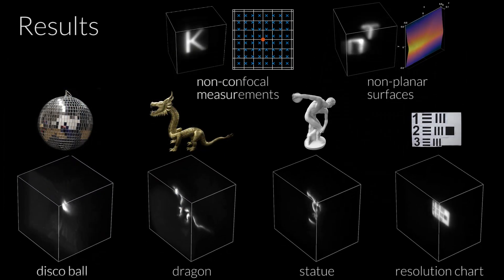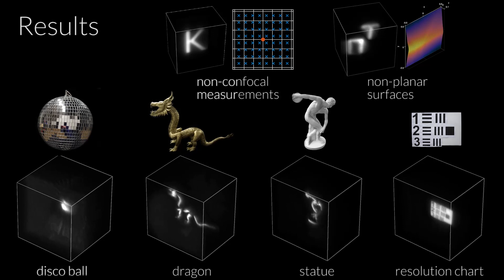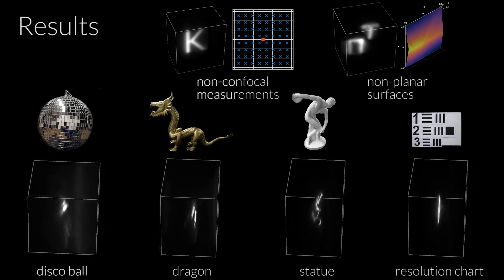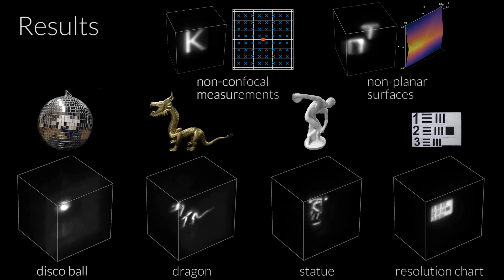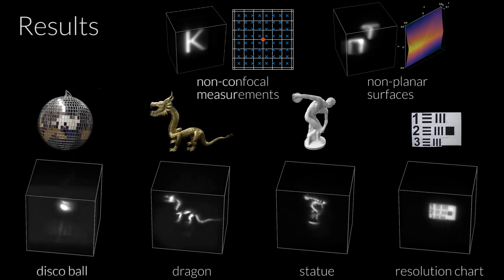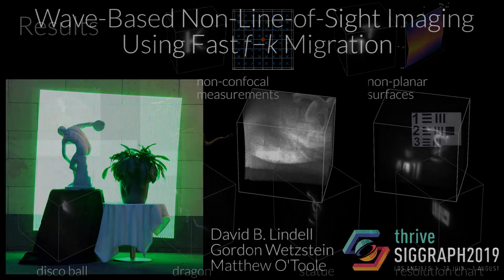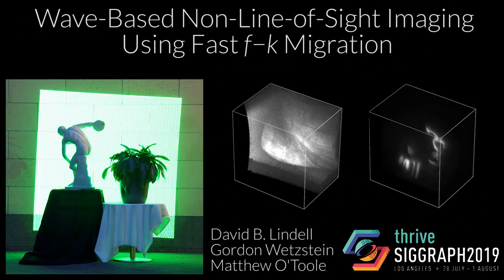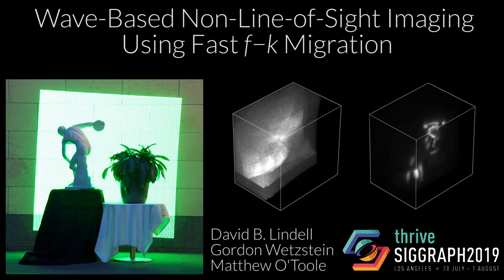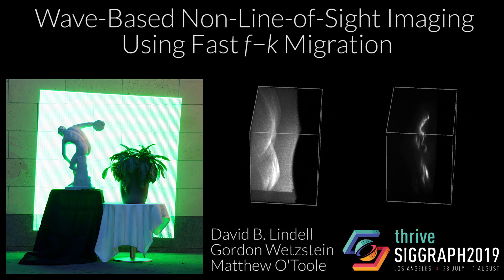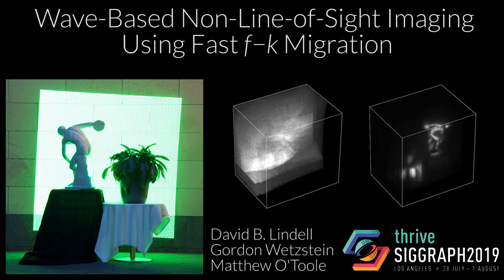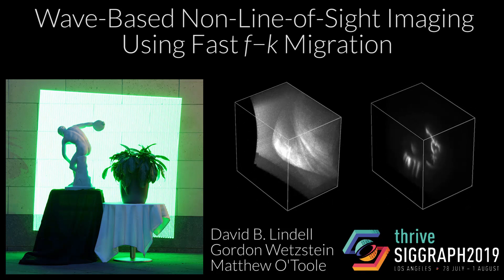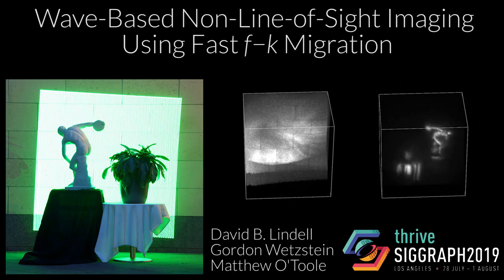We capture a number of other results and demonstrate extensions of our method to handle non-confocal measurements and non-planar scanning surfaces as detailed in the paper. We will also make these datasets publicly available. In conclusion, we make a step forward for non-line-of-sight imaging with a new wave migration procedure which handles varied surface reflectance properties, is fast, robust to noise, and which we demonstrate on large-scale scenes.